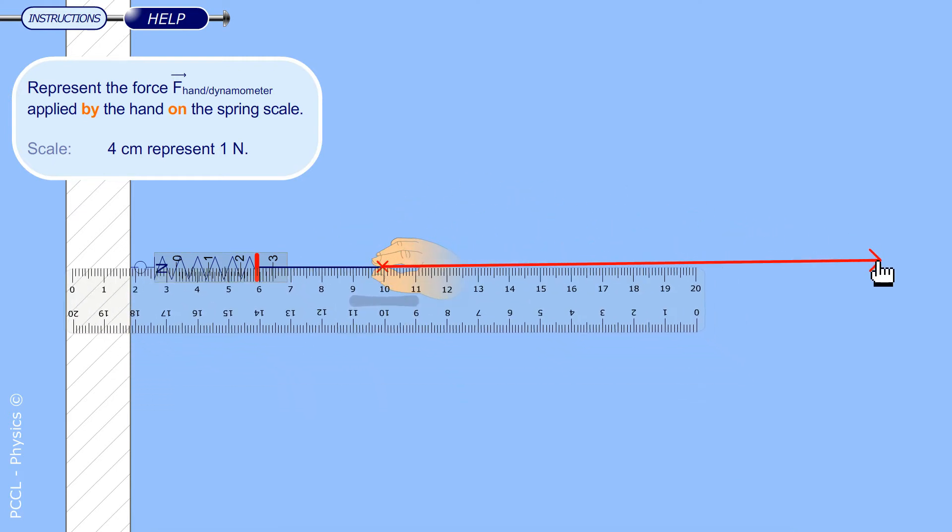Then for the length, I have to apply the scale. One newton represented by four centimeters. How many newtons do I have? It is the spring scale that tells me two and a half. So that's ten centimeters. Here is a horizontal arrow of ten centimeters.